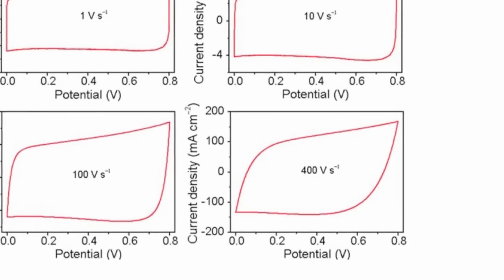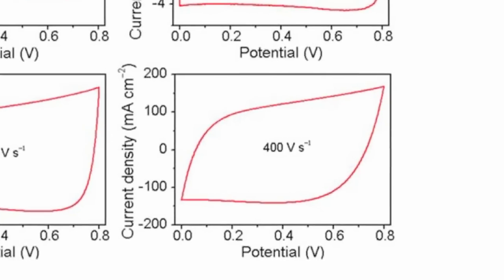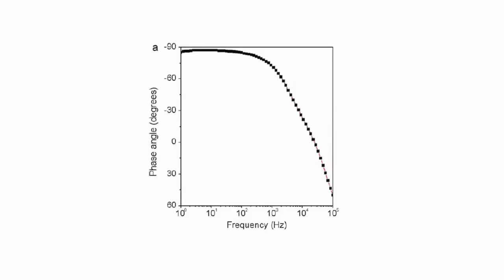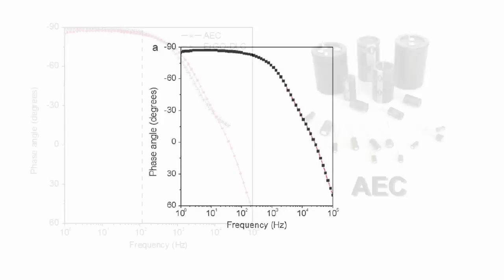Consequently, our graphene capacitor shows superior rate performance. At 120 Hz, the impedance phase angle of electrochemically reduced graphene oxide double layer capacitor is minus 84 degrees.